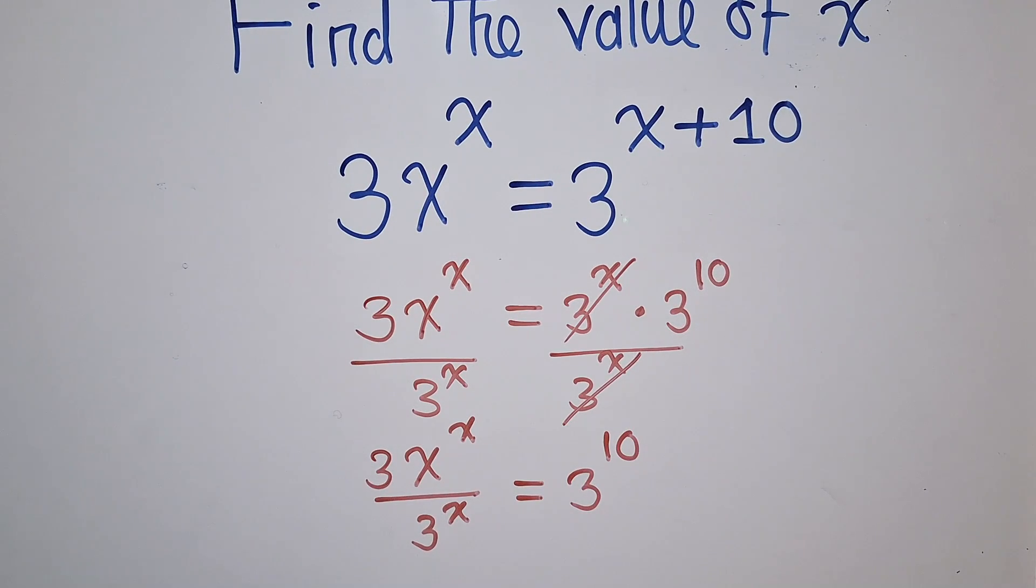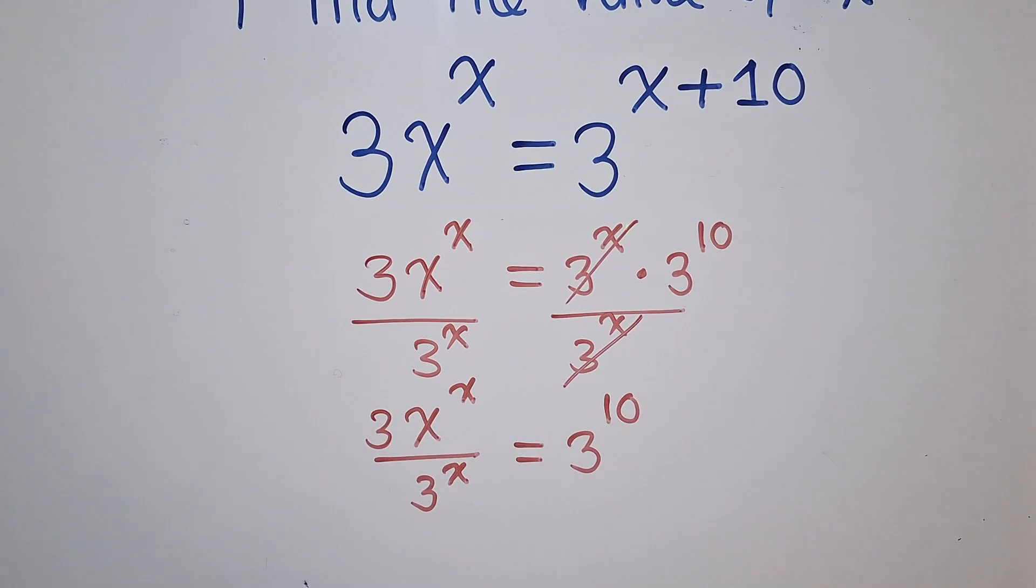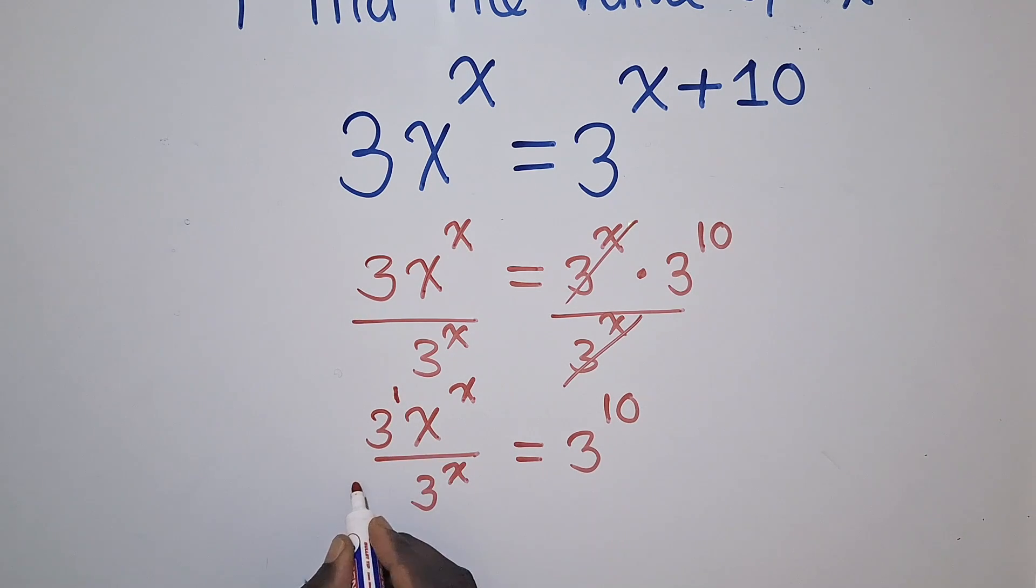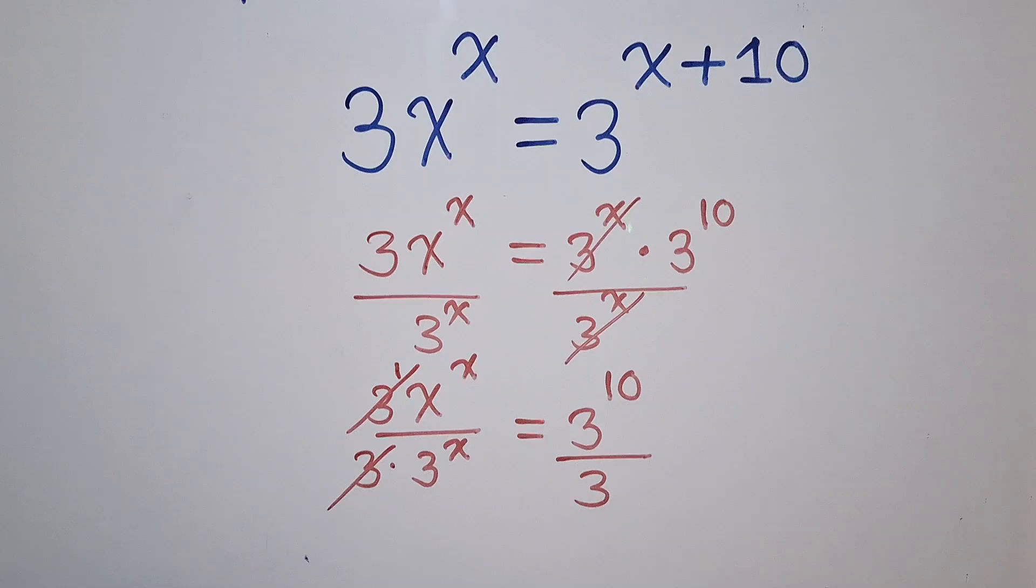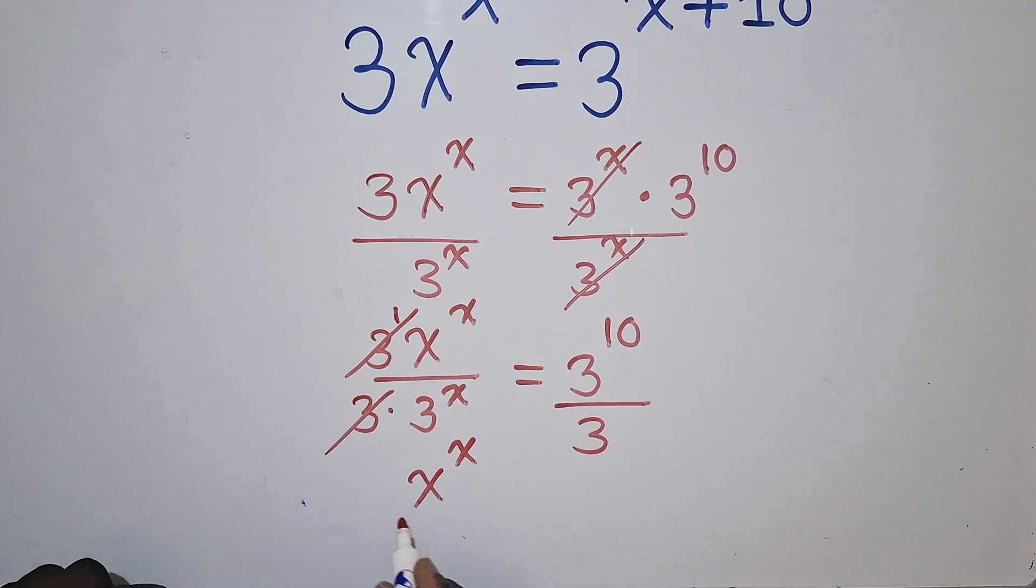This is what we've remained with. So now from this stage, we can also again separate because this 3 has got a power 1. So it can be divided. So when we divide by a 3, this 3, even here divide by a 3. You can see the 3 which is here. The 3 and the 3 will go. So we're going to remain with X power X.